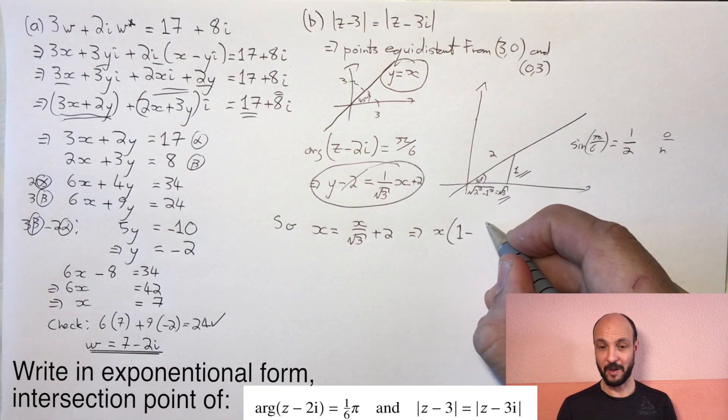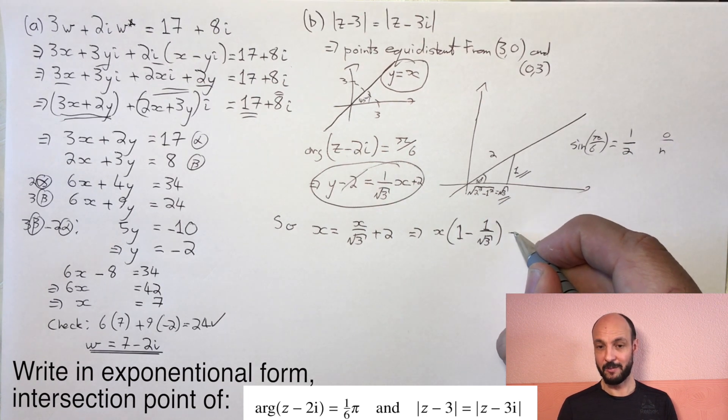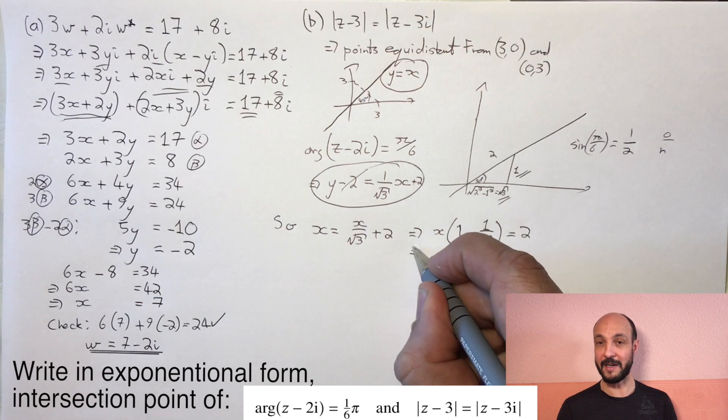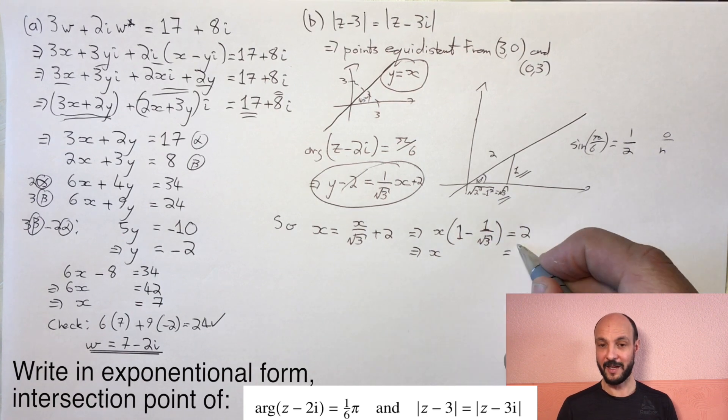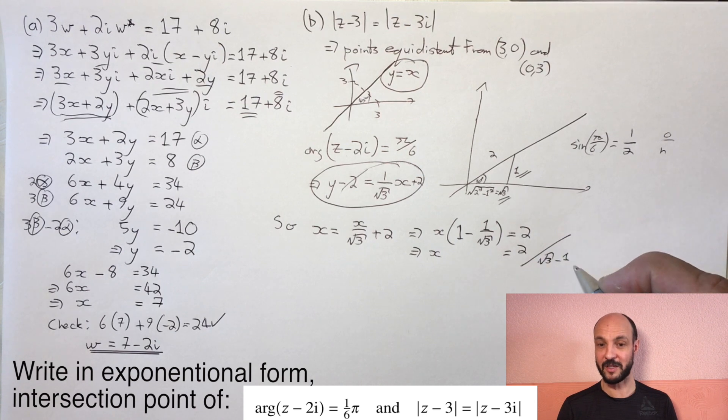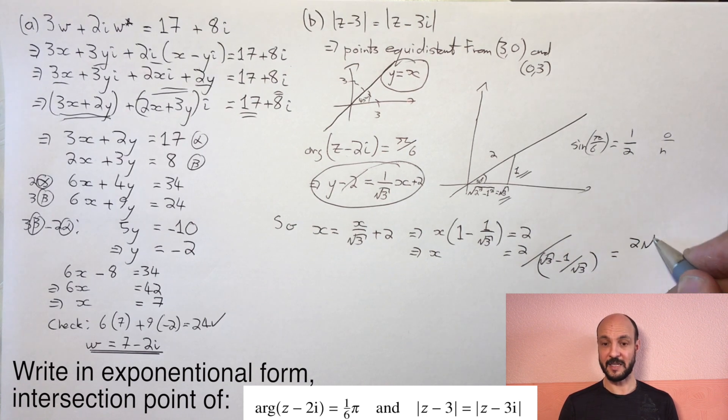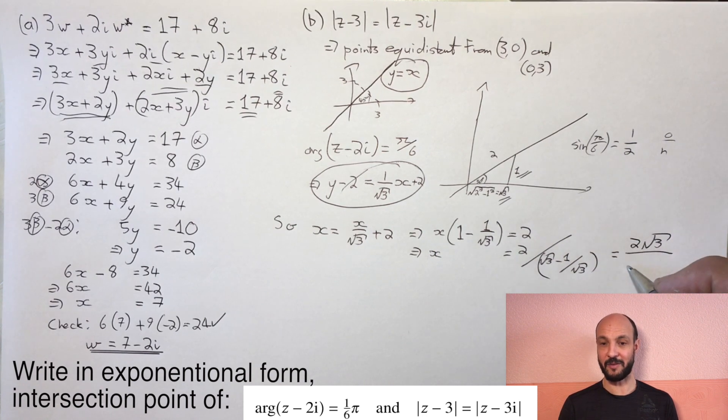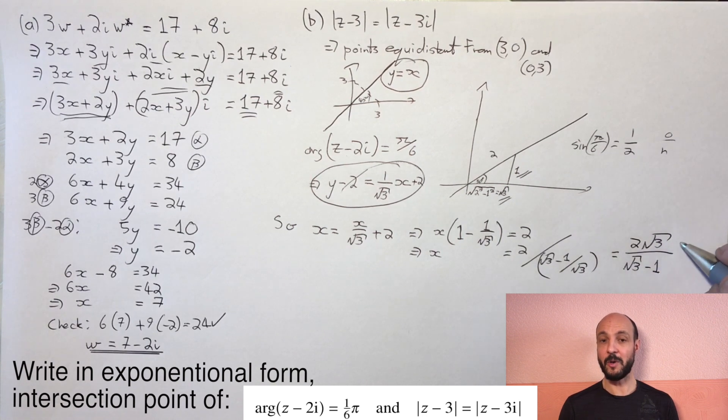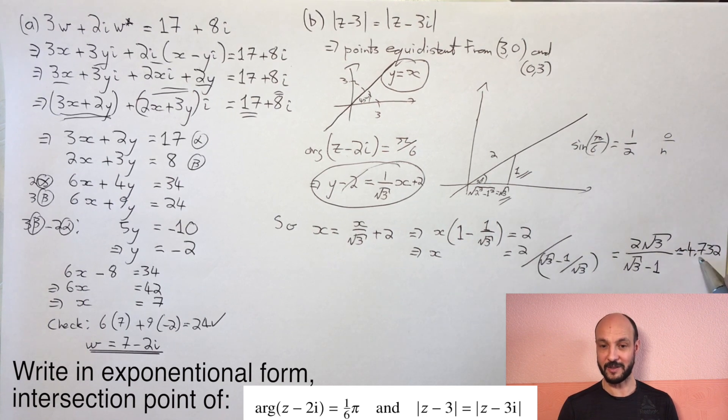We divide both sides by the coefficient of x, we get x equals 2 over, we can rewrite that as root 3 minus 1 over root 3, and then divide by a fraction, we multiply by the reciprocal of the fraction, so we've got 2 root 3 over root 3 minus 1. If we put that into our calculator, to 3 decimal places, it's 4.732, so we've got x is 4.732, and we already know we're on the line y equals x, so y is also 4.732.